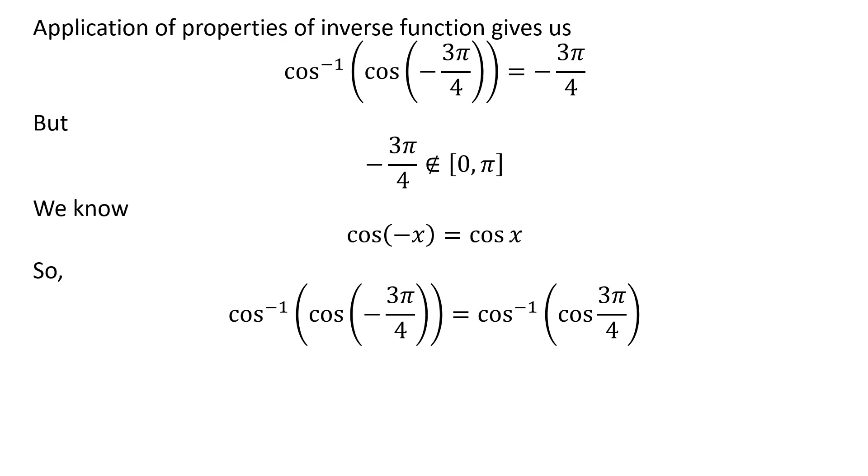Application of the above identity implies inverse of cosine of cosine of minus 3 times pi upon 4 is equal to inverse of cosine of cosine of 3 times pi upon 4.